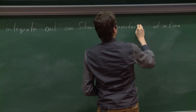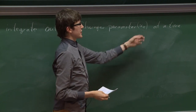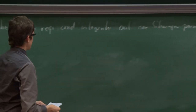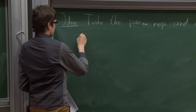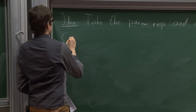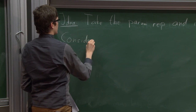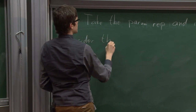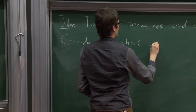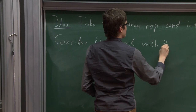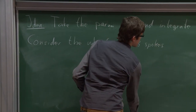The idea we want to follow is to take the parametric representation and integrate out one Schwinger parameter at a time. Recall that we had parameters associated to each edge of the graph called alpha_e when we did the Schwinger trick. I will consider an explicit example: the wheel with three spokes.